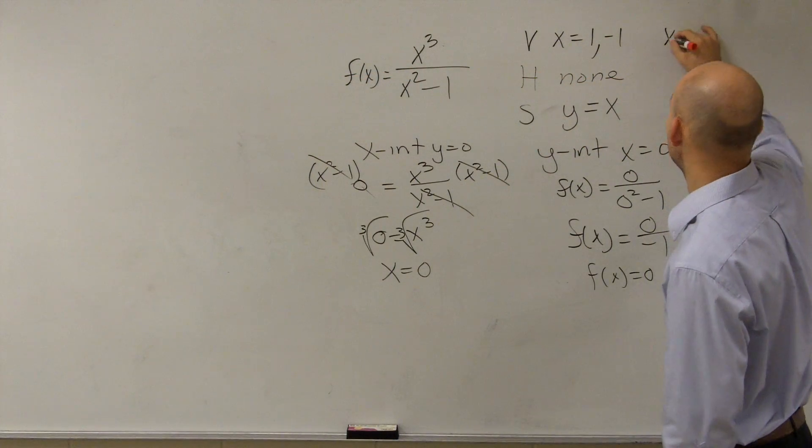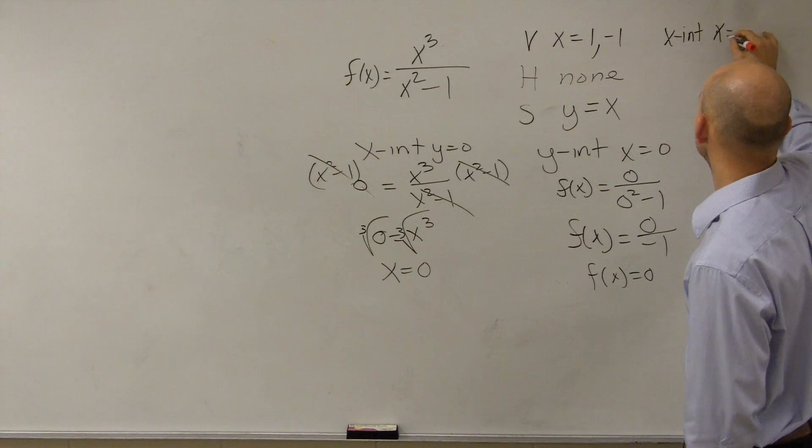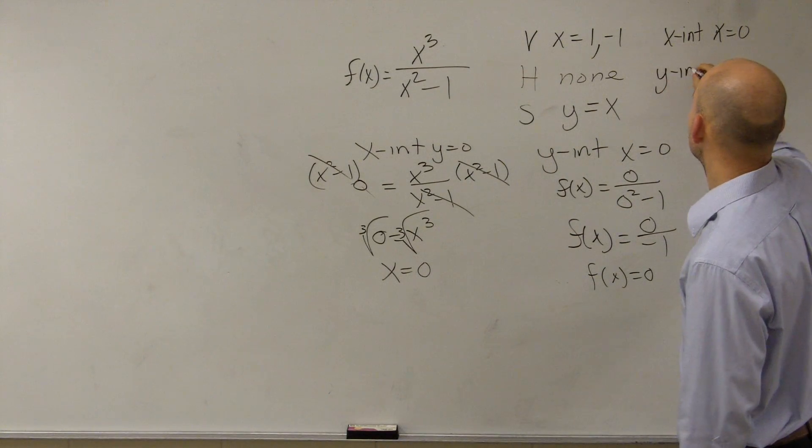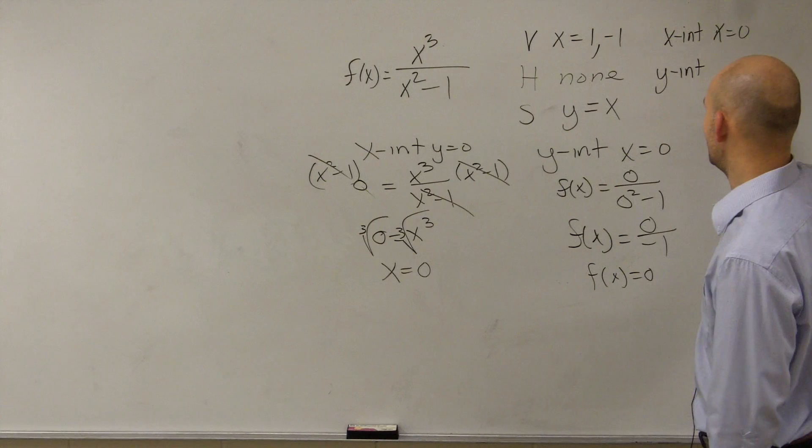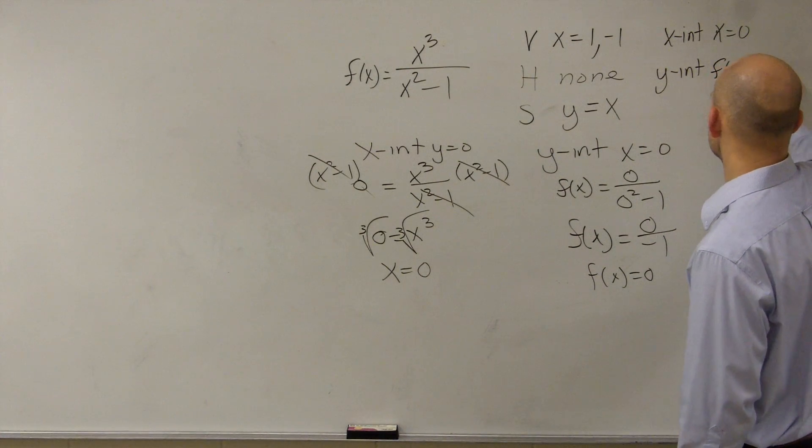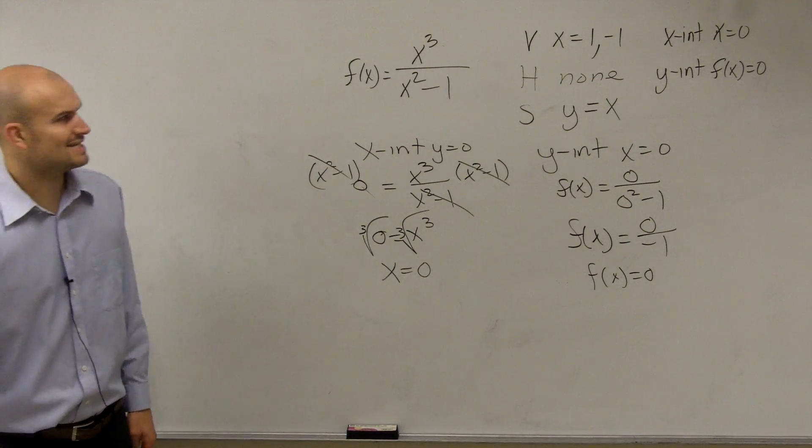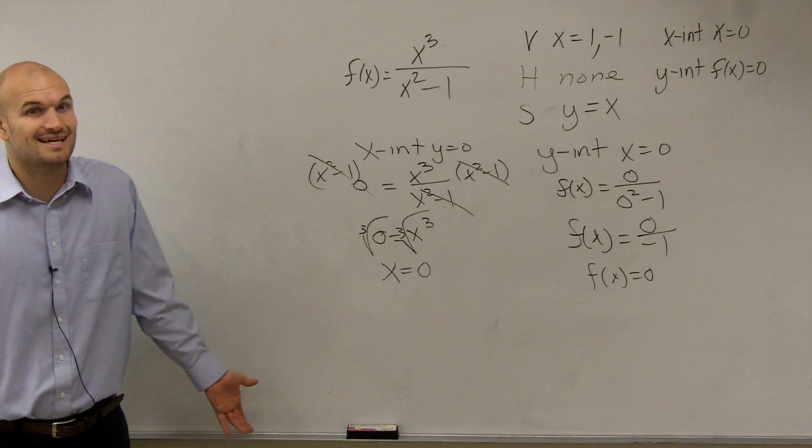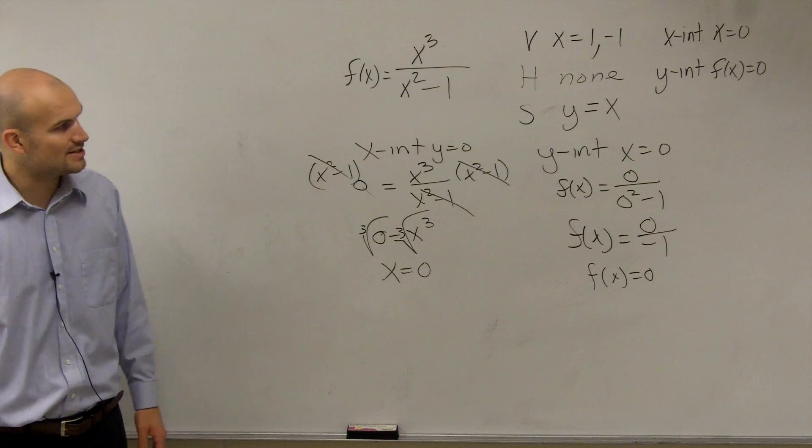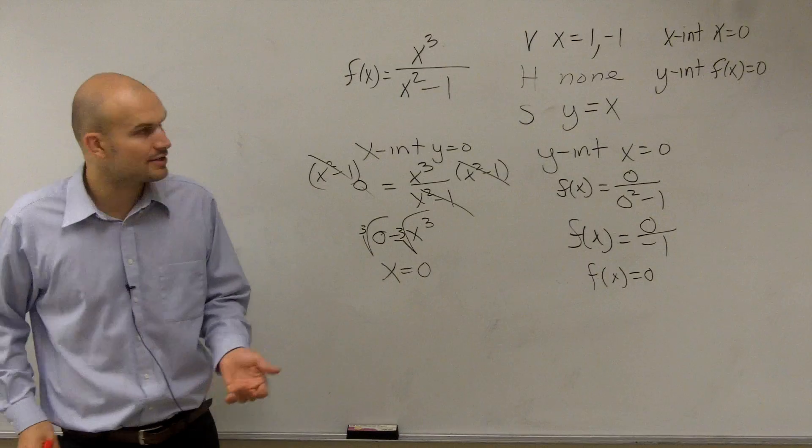So I can say my x intercept is x equals 0. And my y intercept, and my x intercept is when f of x equals 0. So therefore, my graph is going to cross at 0 comma 0. It's going to cross at 0 comma 0. That's it.